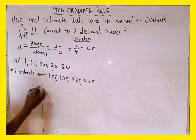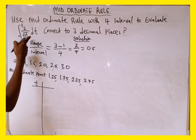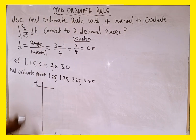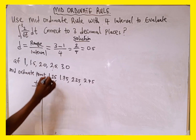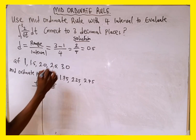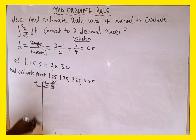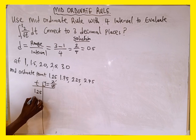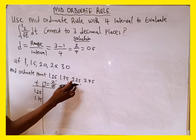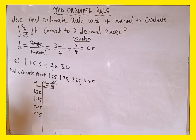We now draw a table. The first column is t, since we are integrating with respect to t, and the second column is y = 2 over root t. The mid-ordinate values go under the column for t: 1.25, 1.75, 2.25, and 2.75. We will substitute each value of t into the function to fill the y column.